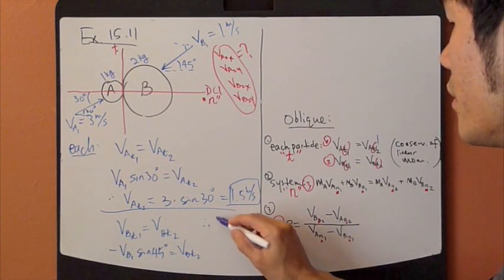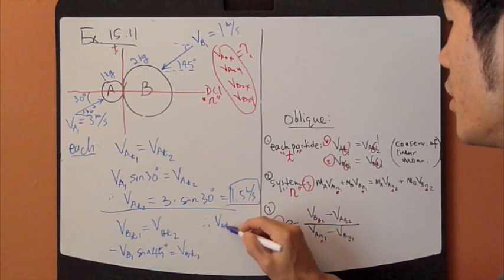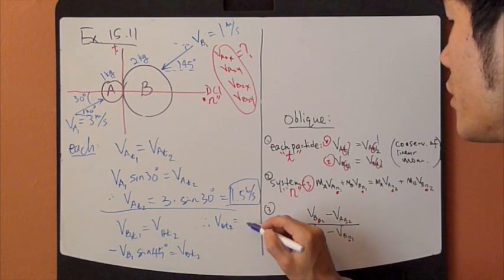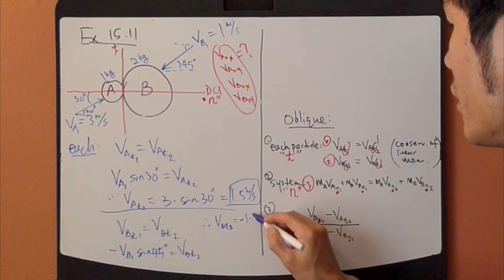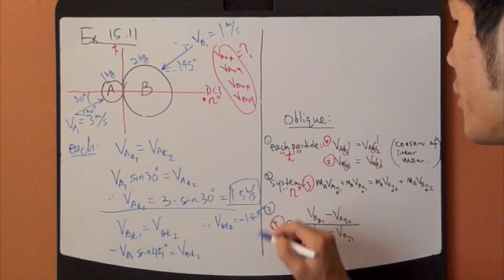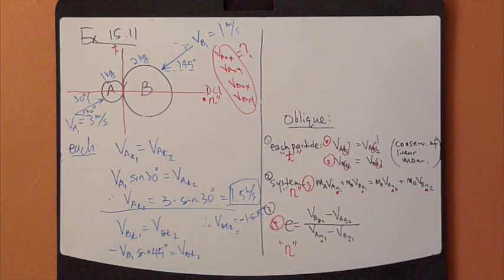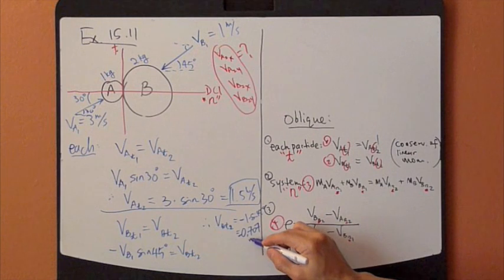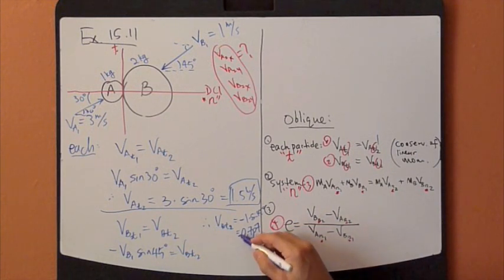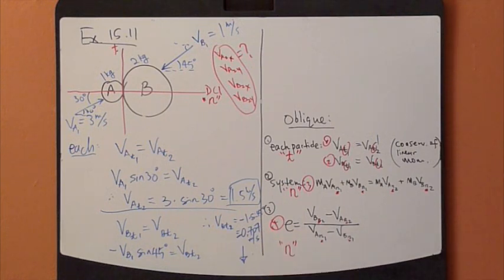Therefore, VBT2 equals, just plug it in. Negative 0.7. So negative sign means it's going downward.